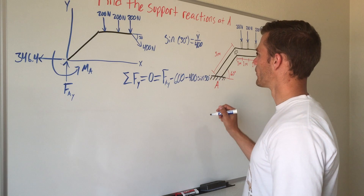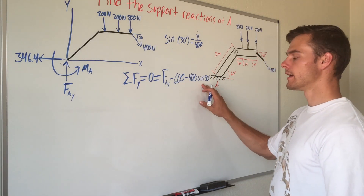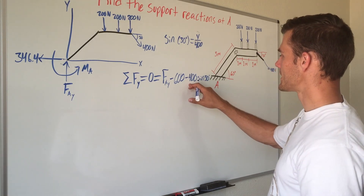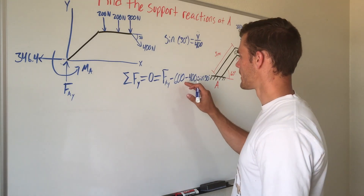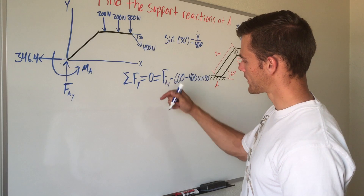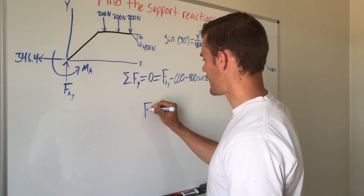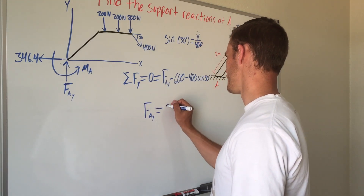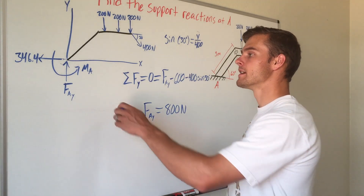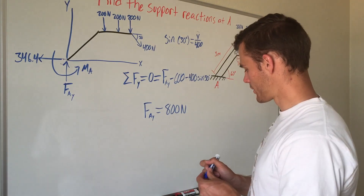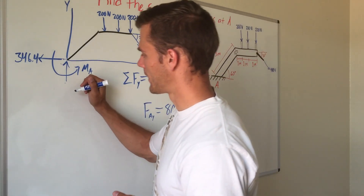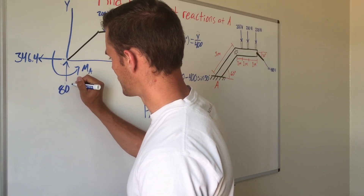Simplifying: sine of 30 degrees is one half, or 0.5, times 400 is also minus 200. So this becomes minus 600 minus 200, which is minus 800. Adding to the other side gives F_AY equals 800 newtons. Because it came out positive, that means we drew our arrow going in the right direction, so we relabel it on our free body diagram as 800 newtons.